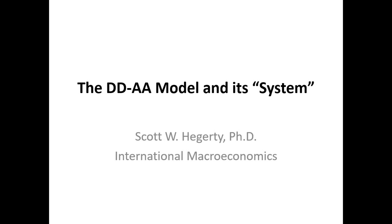Here I'm going to talk about what I call the system of the DDAA model. The DDAA model in international macroeconomics has basically two curves: one for the goods market, one for the asset markets. It's on a single two-dimensional graph, but the system shows the underlying markets that make up these curves.